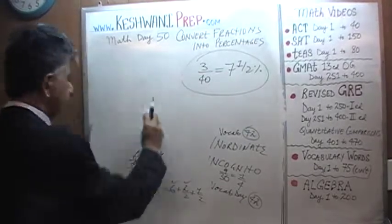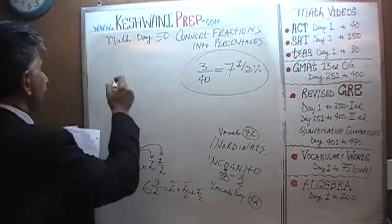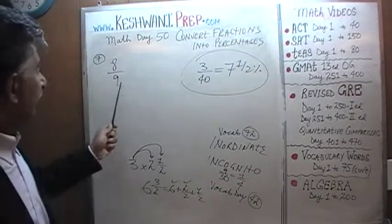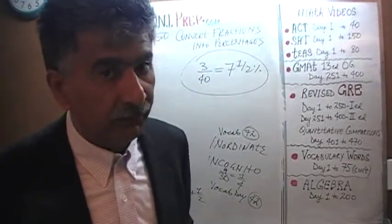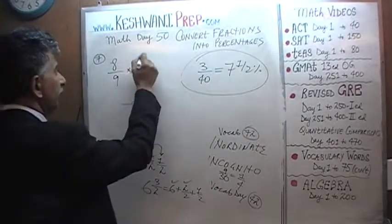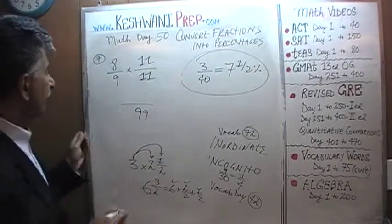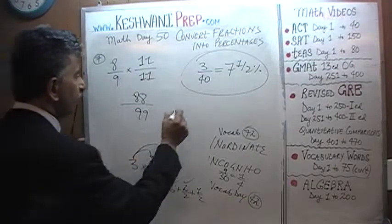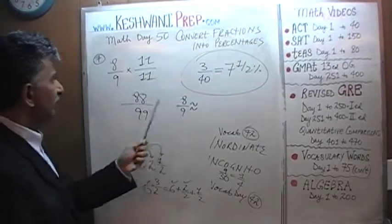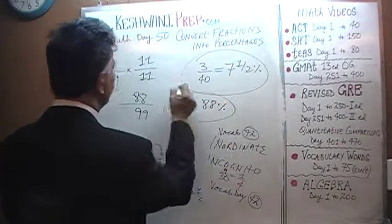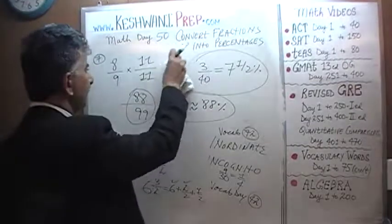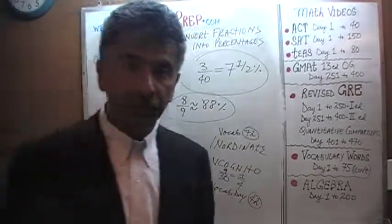Number 7: how about 8 over 9? This is an easy one. What number can we multiply 9 by to make it 100 or something close to 100? The answer is 11, because 11 nines are 99. So we multiply the top by 11 as well: 8 times 11 is 88. Therefore, 8 over 9 is approximately 88%, because 88 over 99 is close to 100 at the bottom. I'll see you tomorrow, bye now.